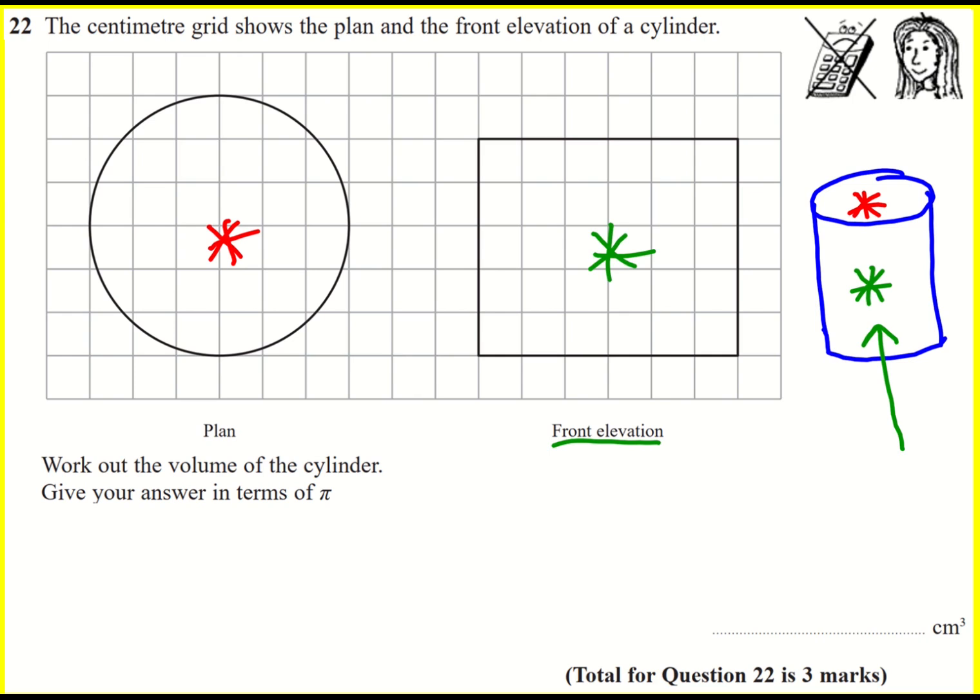To find the volume of a cylinder, you need to do what's called the cross-sectional area, and the cross section here is the lid of the tin of beans or the circle here. This is pi multiplied by the height of the cylinder.